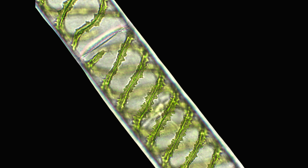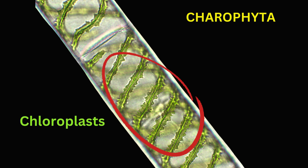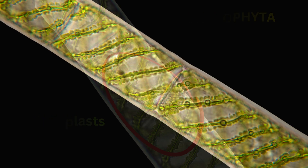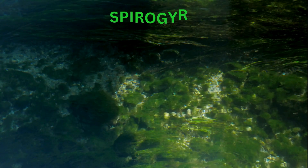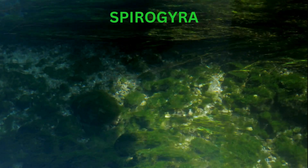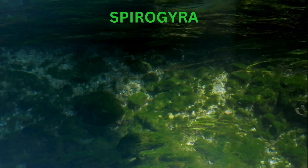Spirogyra is a genus of filamentous green algae belonging to the division Chlorophyta. These algae are characterized by their distinctive spiral-shaped chloroplasts, which give them their name. Spirogyra is a common inhabitant of freshwater environments, such as ponds, lakes, and slow-moving streams.